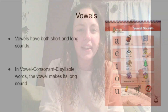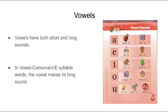Let's review the sounds that vowels can make. We know that vowels have both short and long sounds. In class, we worked a lot on short vowel sounds. However, in vowel consonant e syllable words, the vowel makes its long sound or says its name. So in a vowel consonant e syllable word, instead of A saying 'a - apple - a,' it would say 'A - safe - A.'